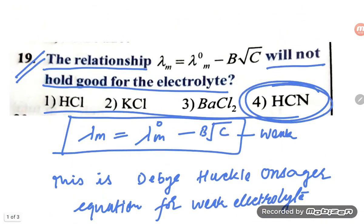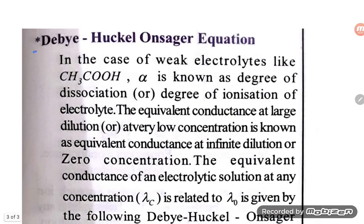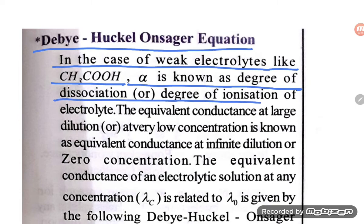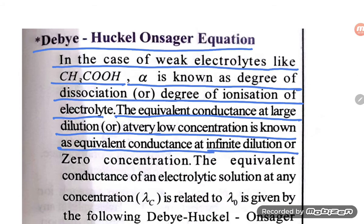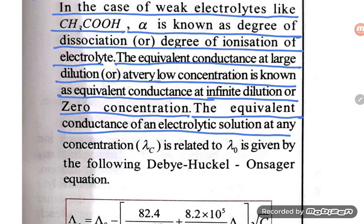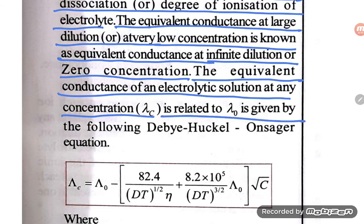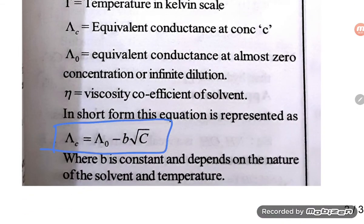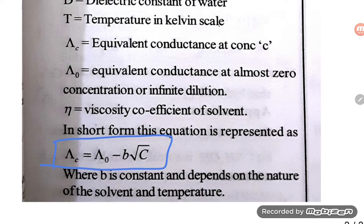So our correct option is option number four. Now let us understand the Debye-Hückel-Onsager equation in detail. For weak electrolytes like acetic acid, α is the degree of dissociation or ionization. At very low concentration, the equivalent conductance is known as equivalent conductance at infinite dilution (λ°). The equation is: λc = λ° - b√c.